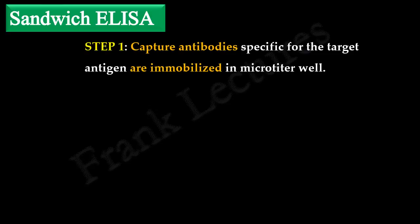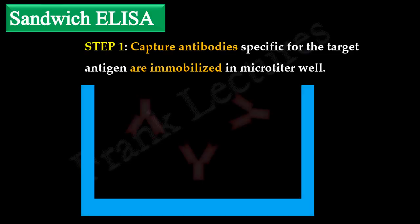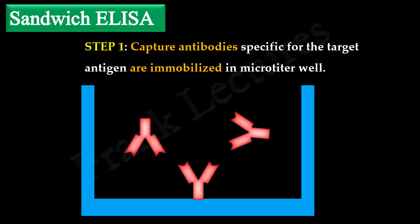In the first step of sandwich ELISA, the capture antibody is immobilized in the microtiter well. The capture antibody is a high-affinity antibody specific to the target antigen. Its function is to capture the target antigen from the test or serum sample.